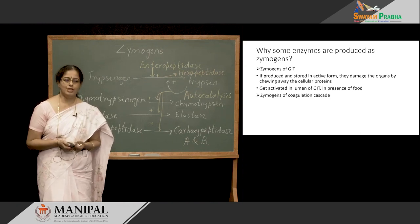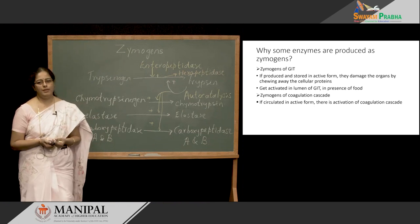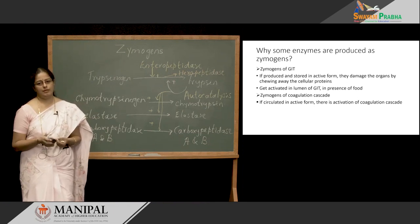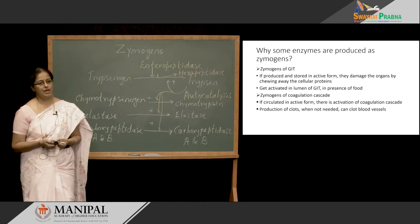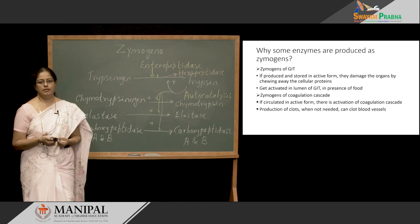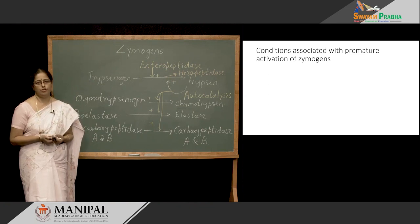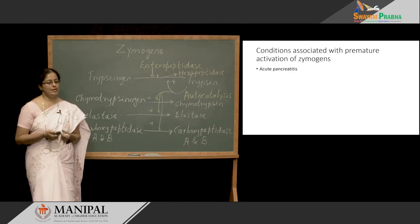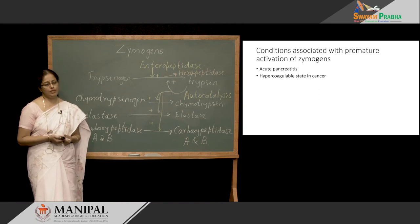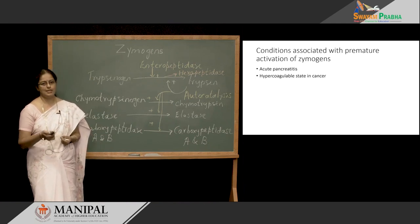Now considering Zymogens of the coagulation pathway — if they were circulated in active form, they would be responsible for producing clots, activating the coagulation pathway unnecessarily, which is very damaging to the system. Do we have any conditions associated with premature activation of Zymogens? I will be listing out two conditions: there is a condition called acute pancreatitis, where pancreatic Zymogens get prematurely activated, and a condition called hypercoagulable state associated with different cancers, where there is clot formation whenever it is not necessary.